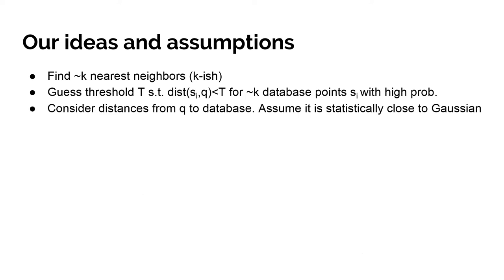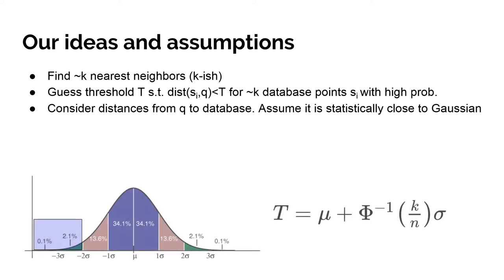Putting everything together, such a threshold is easy to find if the distribution were Gaussian. All we need to know is the average mu and the standard deviation. Then the threshold T is given by this formula. It remains to show how to compute the average of distances and the average of distances squared.